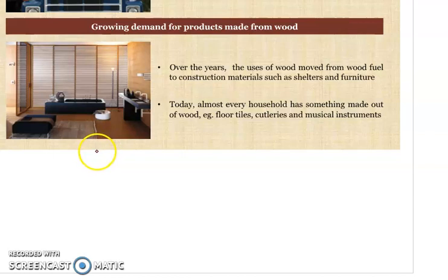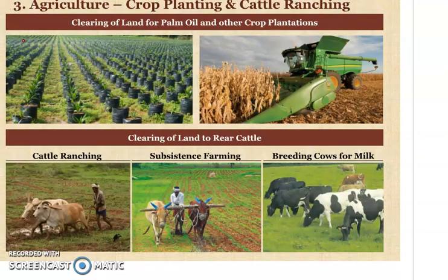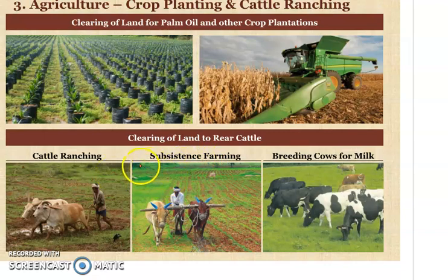Increasing demand for houses has led to different industries. Over the years, the uses of wood moved from wood fuel to construction materials like shelters and furniture. Today, almost every household has something made out of wood — floor tiles, cutlery, musical instruments, furniture. With this increasing demand for wood, cutting of plants and trees is increasing. Increasing population is also leading to increased food demands, which leads to clearing of land for palm oil and other crop plantations. Farmers are clearing more land to grow more food, as this diagram illustrates.